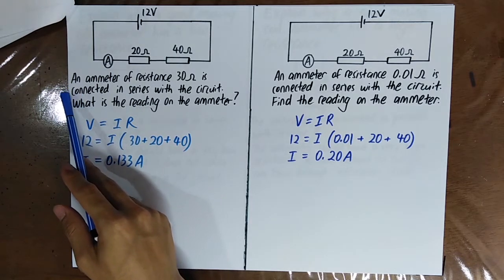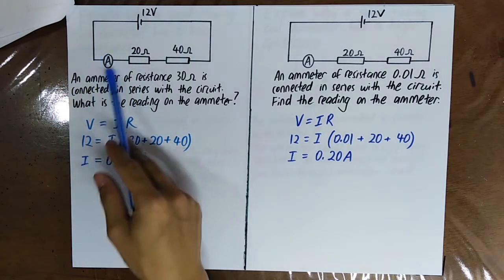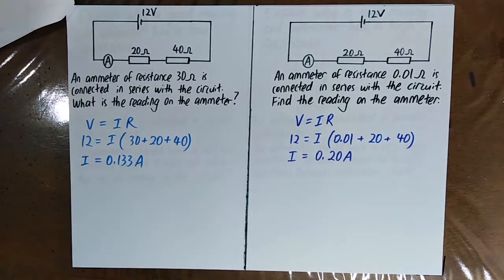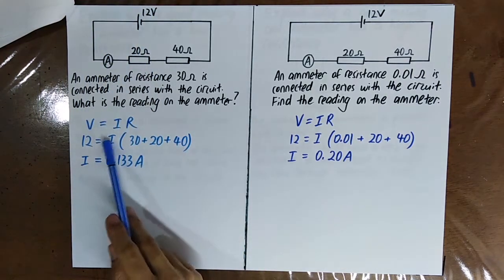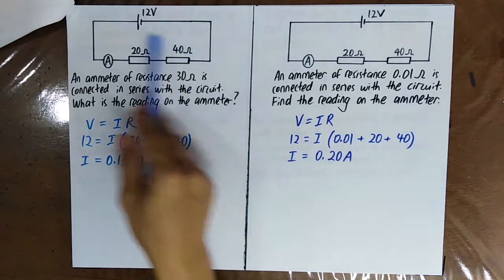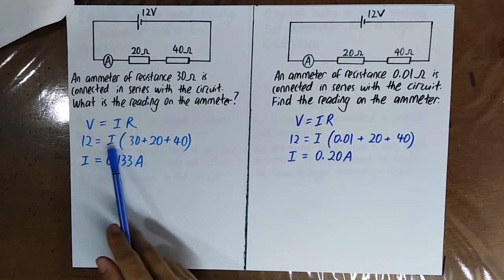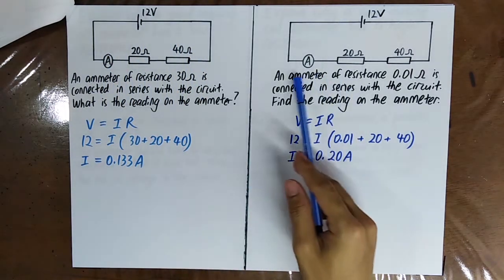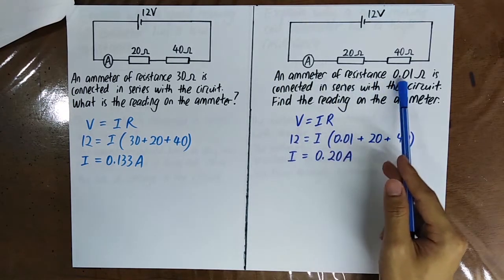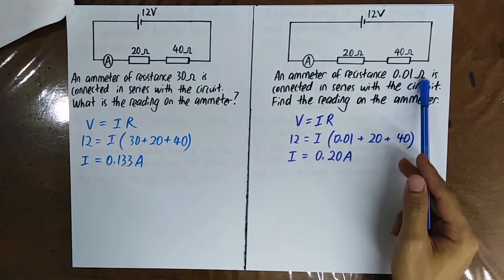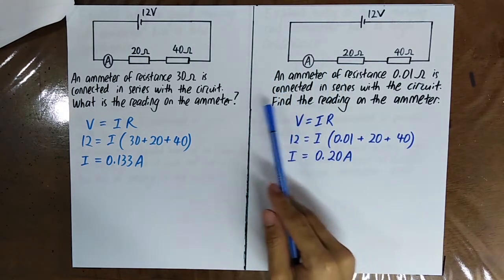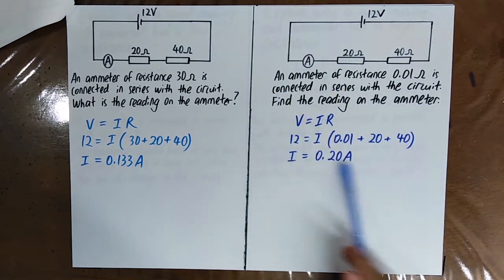The ammeter is connected here. What is the reading on the ammeter? V equals I times all the resistance, and you get this value. Then, another ammeter of resistance 0.01 ohm is connected in series — once again, please find the reading on the ammeter.